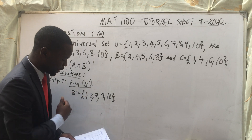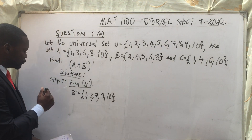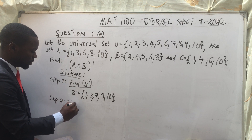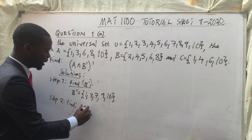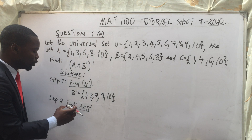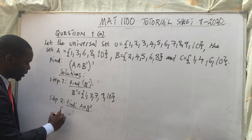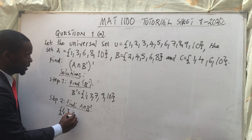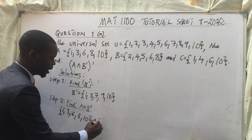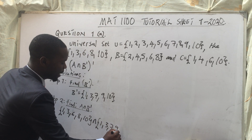So B complement is {1, 3, 7, 9, 10}. After finding B complement, step 2: let's find A intersection B complement. We know that set A is {1, 3, 6, 8, 10}, and B complement is {1, 3, 7, 9, 10}.